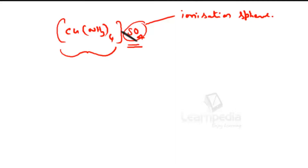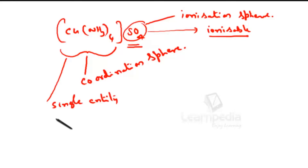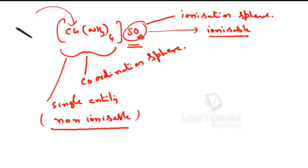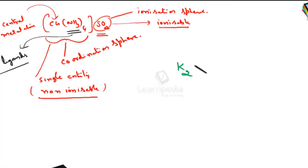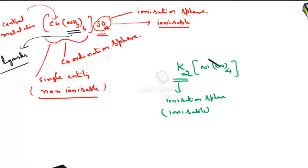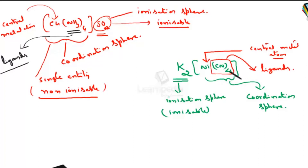The part completely inside the square bracket is the coordination sphere, and the sulphate outside is ionizable, while what is inside the square bracket acts as a single entity and is non-ionizable. This copper metal is the central metal atom, and the four ammonia groups are the ligands. Similarly, in K₂[Ni(CN)₄], the potassium outside the square bracket is the ionization sphere and is ionizable, while what is inside the square bracket is the coordination sphere. Nickel is the central metal atom, and the four cyanide groups attached to it are the ligands.